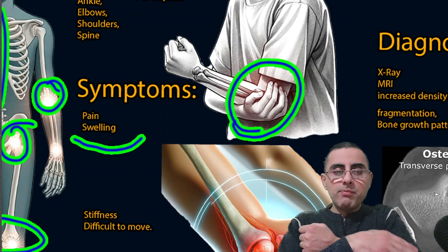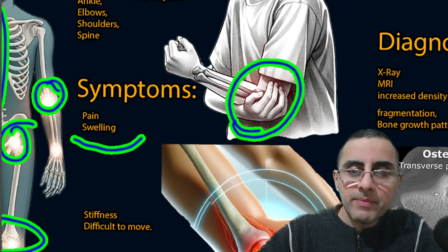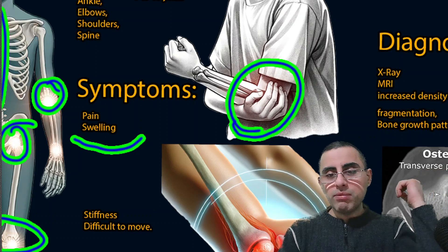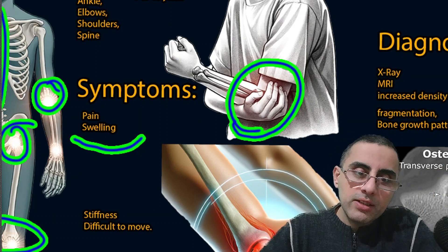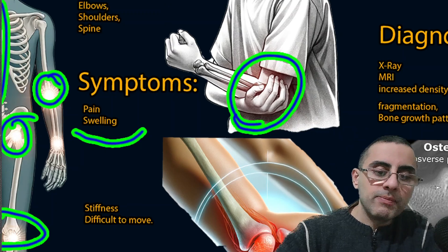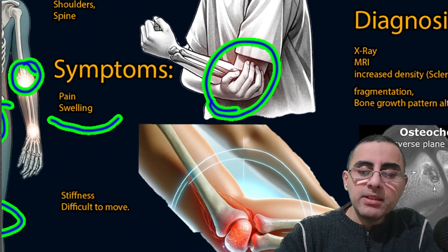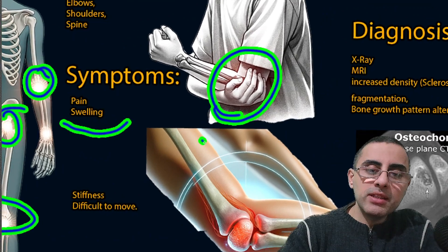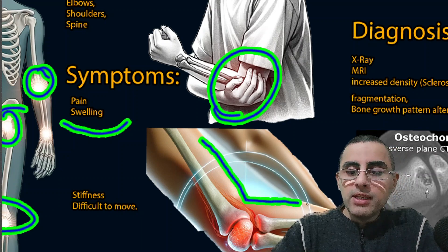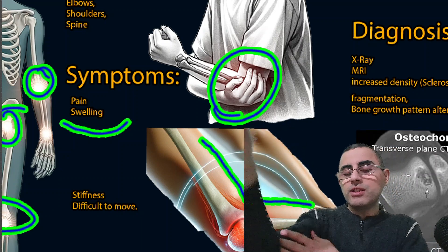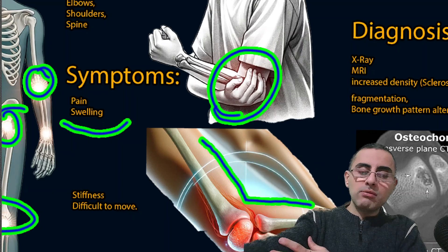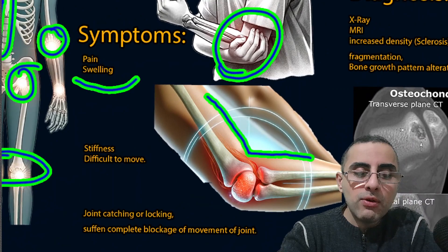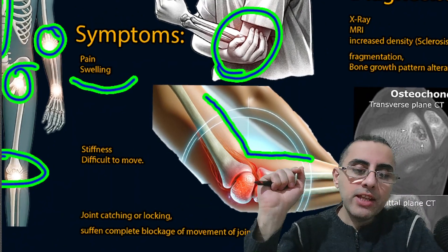The second most common symptom is swelling. When you press the joint, it is tender — a sign of inflammation. The third symptom is stiffness, both muscle stiffness and joint stiffness, meaning that it is difficult to move the joint. A more severe form of stiffness is joint catching or locking.